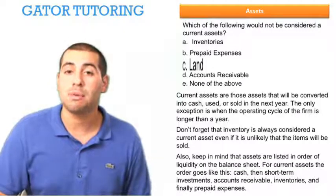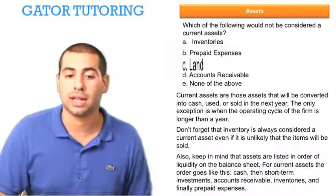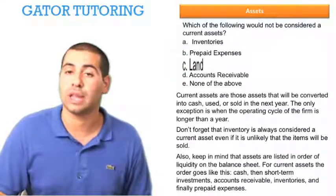Also, keep in mind that assets are listed in order of liquidity on the balance sheet. For current assets, the order goes like this: